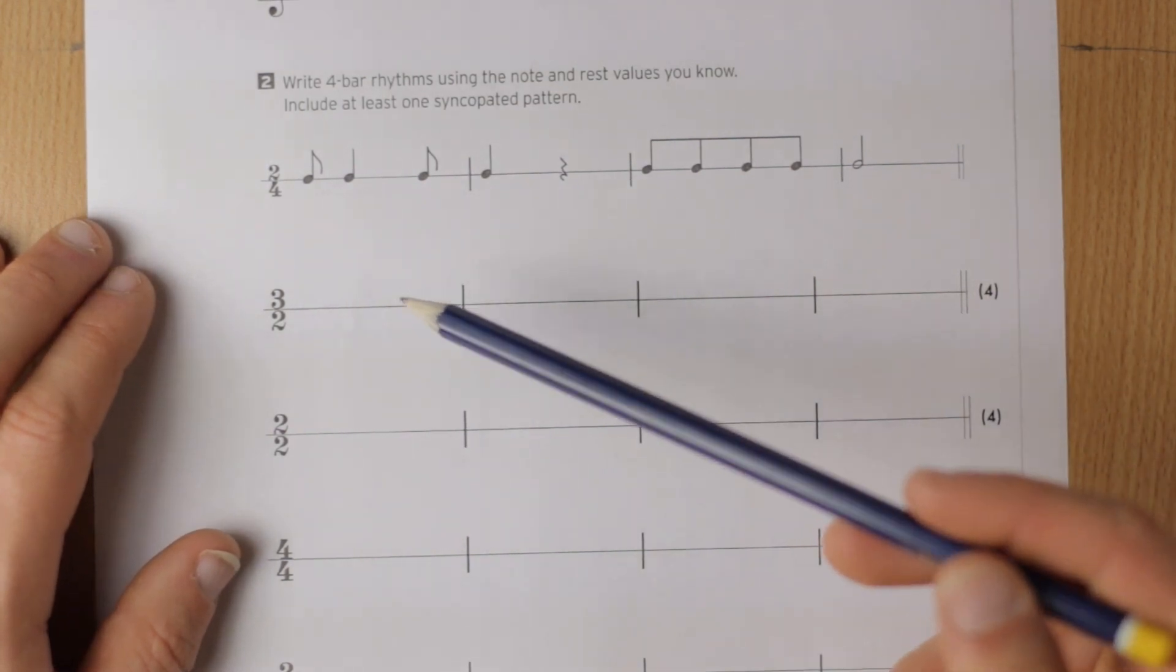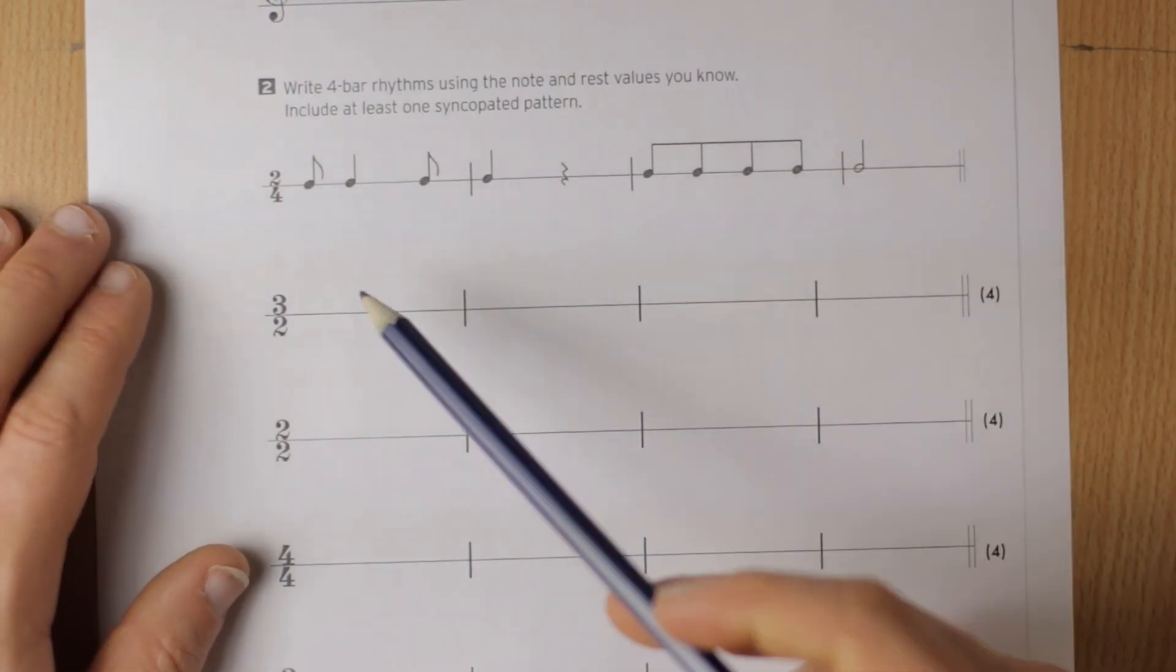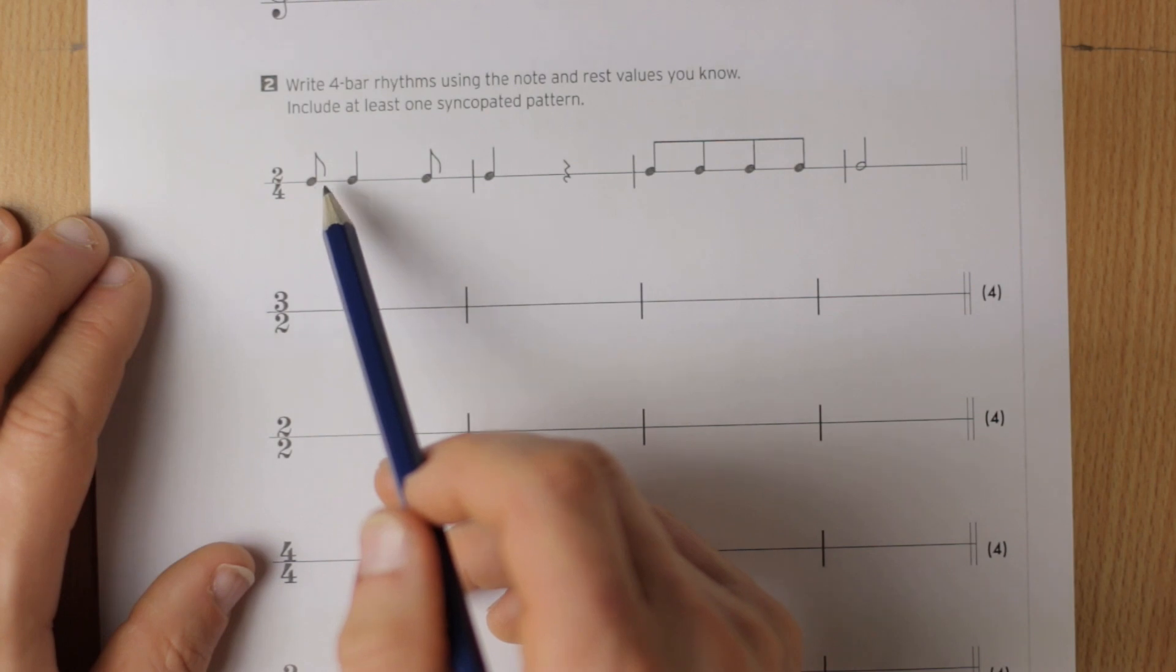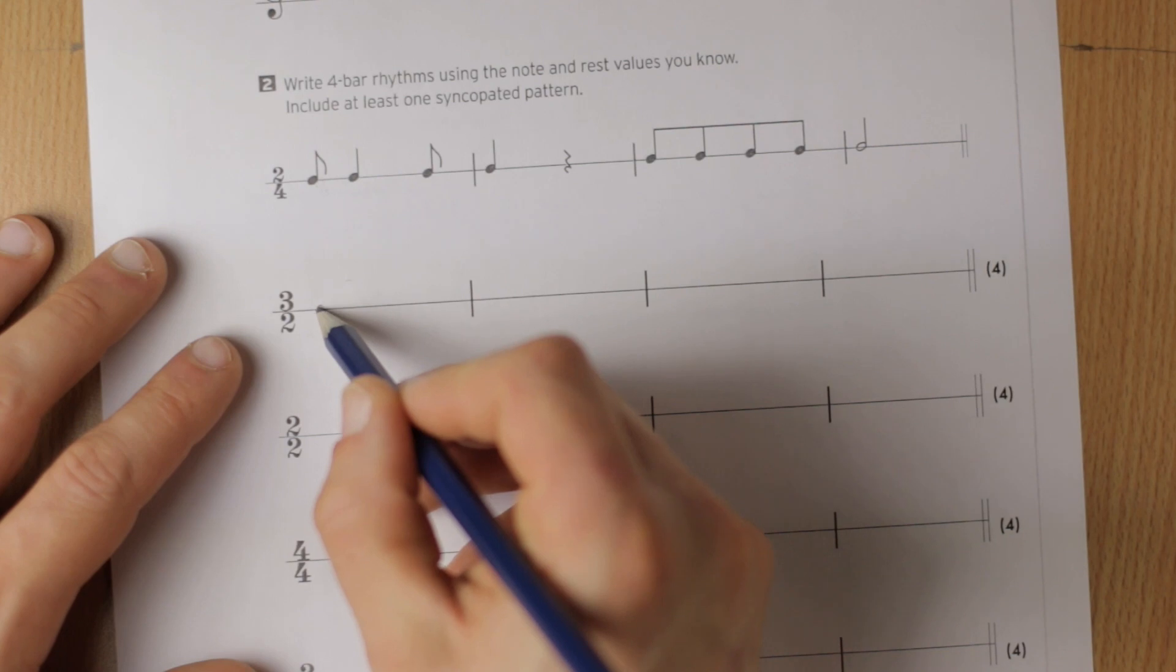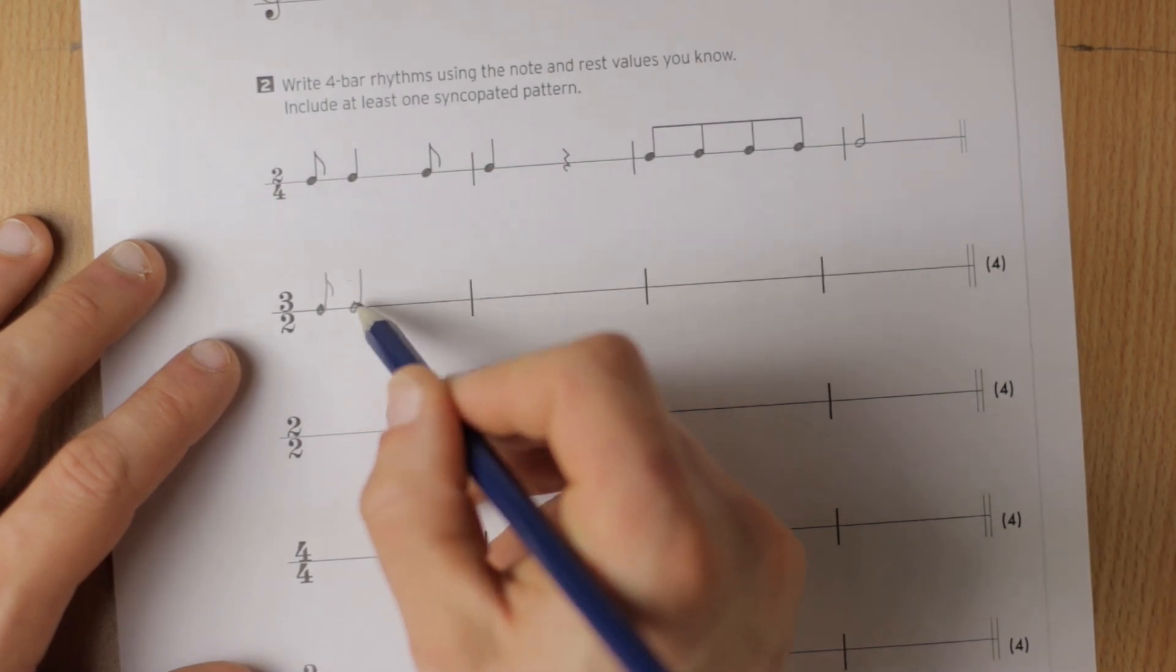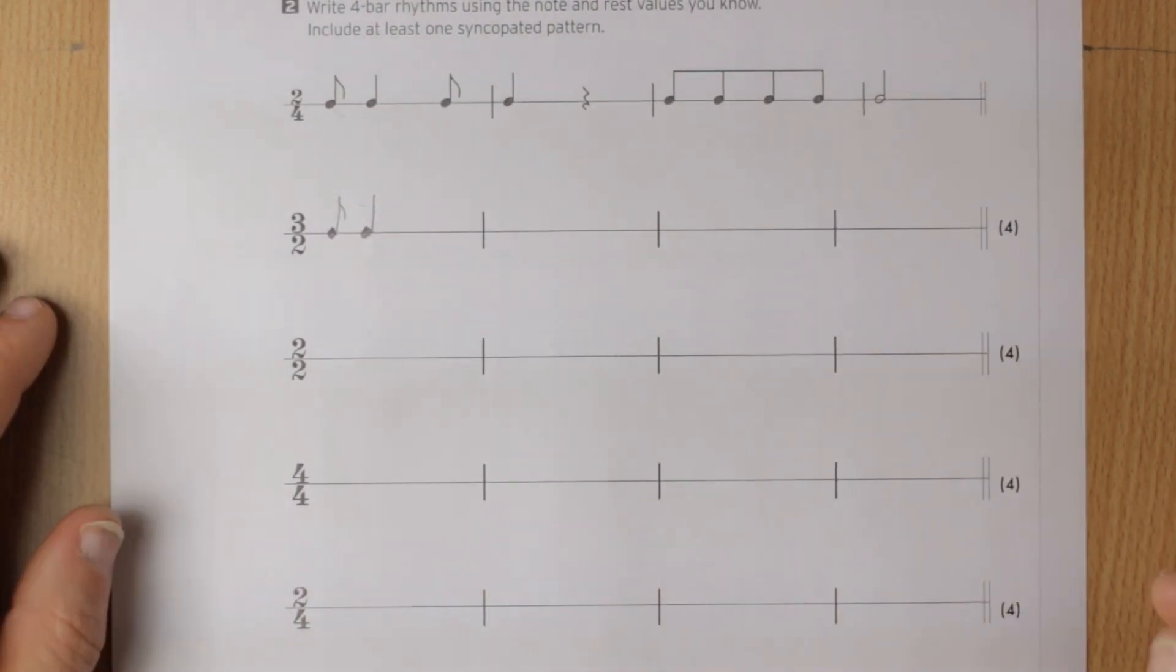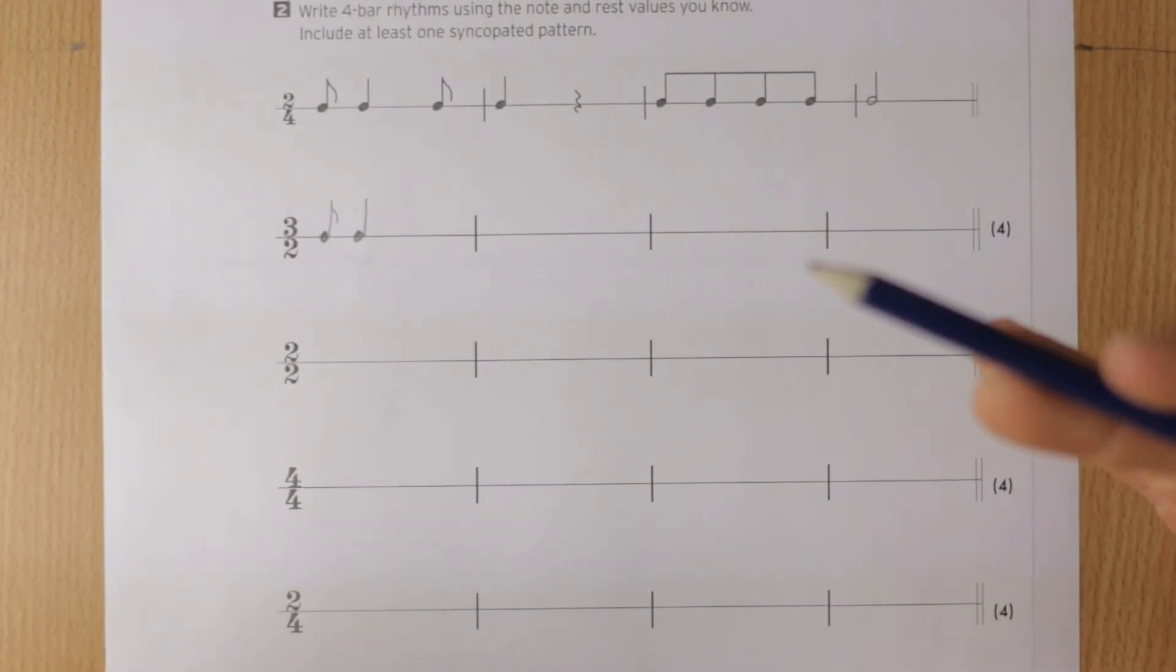And they need to be syncopated now. So you do actually need to make sure they're syncopated. And how do you do that? Well, it's all about messing with this normal grouping. To do this, I would suggest you try and start with a quaver. If you start with a quaver and then a crotchet, that's going to mess up the beat. And then you can just fill up the rest of it with the right number of beats.